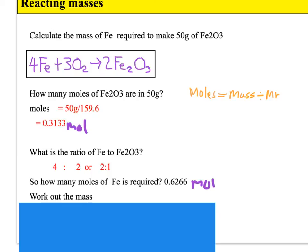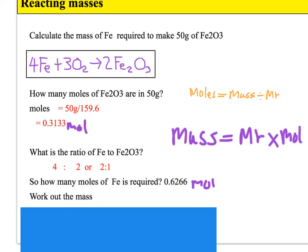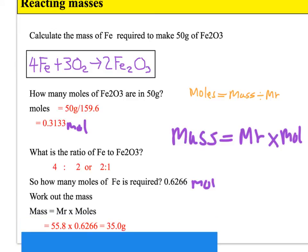Now, we haven't been asked for the moles, we've been asked for the mass. So we just use our equation - mass equals MR times mole - to work out the mass. So that would be our MR of iron, look up on the periodic table, it's 55.8 times the moles, 0.6266, equals 35.0 grams.